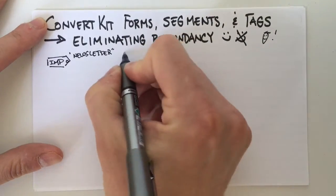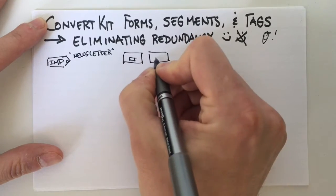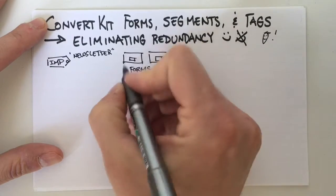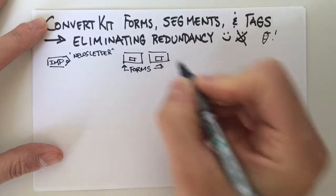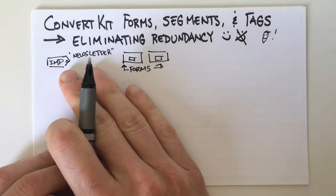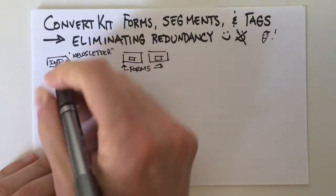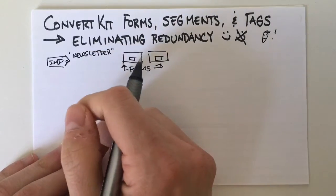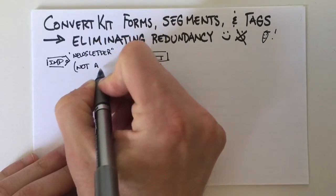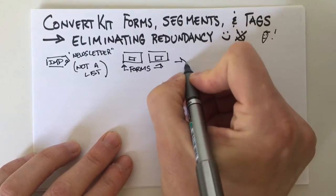And then we set up our different forms — it could be on the sidebar, it could be after a post. So we've got our two forms here. What I see happen a lot with ConvertKit is that people are so used to sending to a specific tag or specific list that they start using this initial tag as their new list, and you don't need to do that. Let me show you what you can do instead.